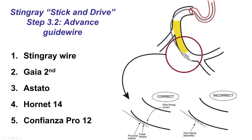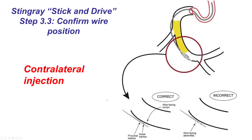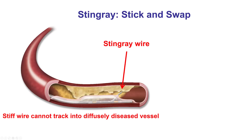The wire is advanced aiming for the direction that faces into the distal true lumen. If it faces the adventitia, the wire is withdrawn and then advanced again. One exit port is between the two markers of the Stingray balloon, and the other exit port is proximal to the proximal marker. The next step is to confirm the guide wire is in the distal true lumen with contralateral injection, followed by advancement and stenting.